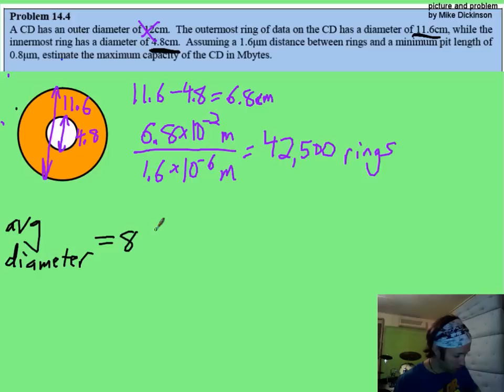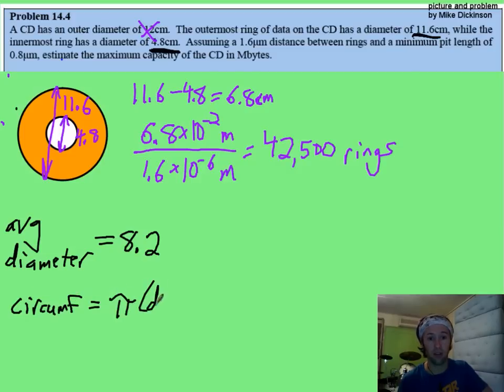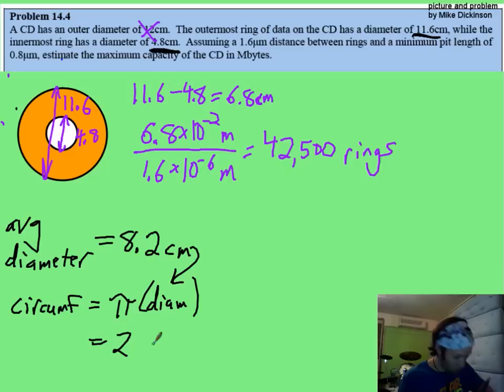That turns out to be 8.2 centimeters is the diameter. Now you want to find the circumference. So the circumference, you should know, is pi times the diameter.